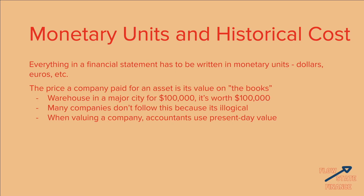Now let's talk about historical cost. Historical cost is the idea that the price a company paid for an asset is its value on the books — meaning on a company's financials. So let's say in 1970, a company bought a warehouse in a major city for $100,000. On the books, it's worth $100,000.